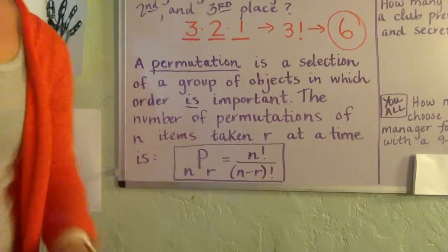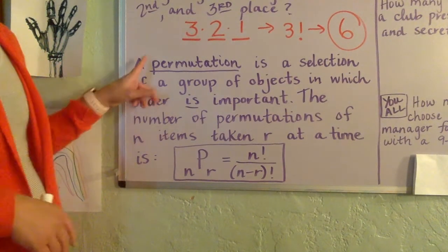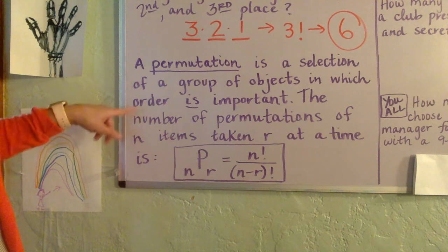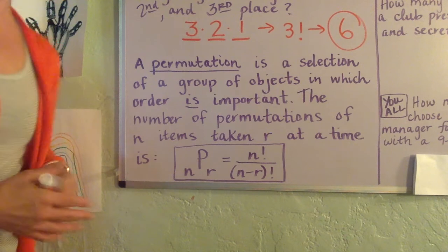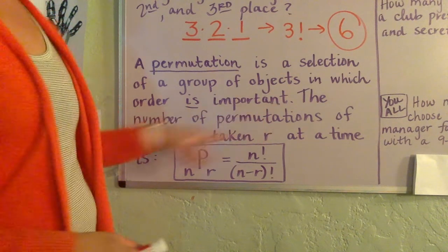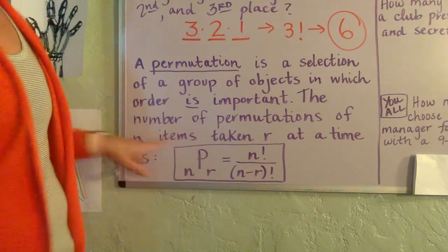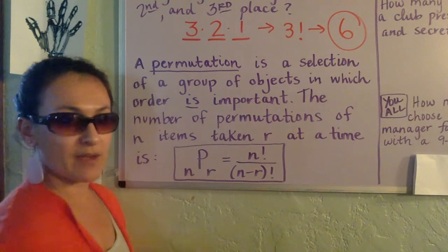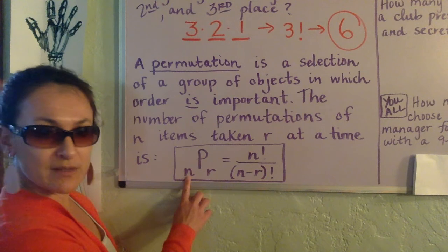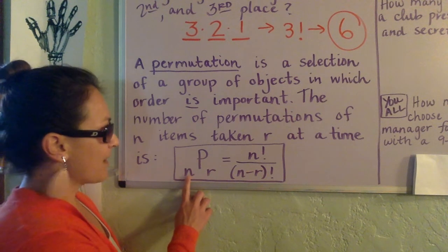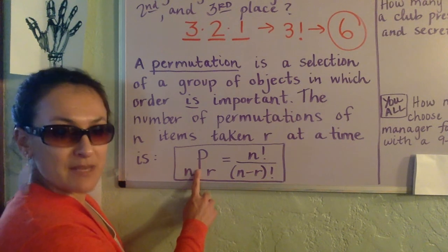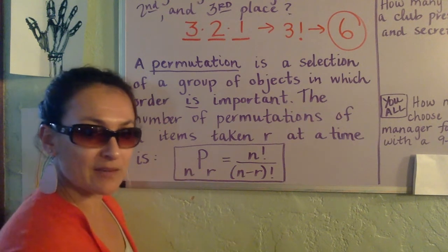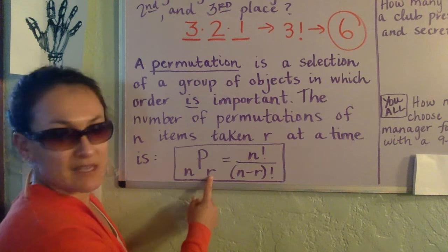Let's take a look at what a permutation is. A permutation is the selection of a group of objects in which order is important. The number of permutations of n items taken r at a time is given by this formula. So it's a little n right here—this is the total number of items. And then we put the P here to represent permutation. I like to think of this as pick and rank and order, this many of them.